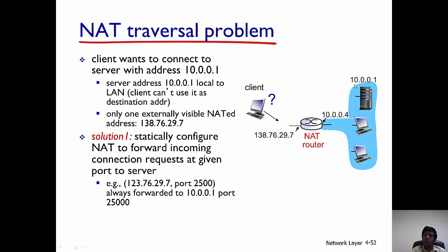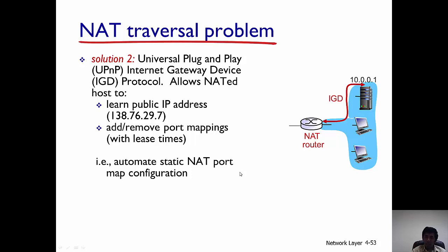For example, traffic arriving at 138.76.29.7 on port 2500 is forwarded to the server at 10.0.0.1 at port 2500. However, static configuration has issues — every time the server's IP changes or you add servers, you must update the NAT table manually. A better solution is the Universal Plug and Play (UPnP) protocol, which automatically learns IP addresses and populates NAT table entries dynamically, similar in flavor to DHCP, without much human intervention.